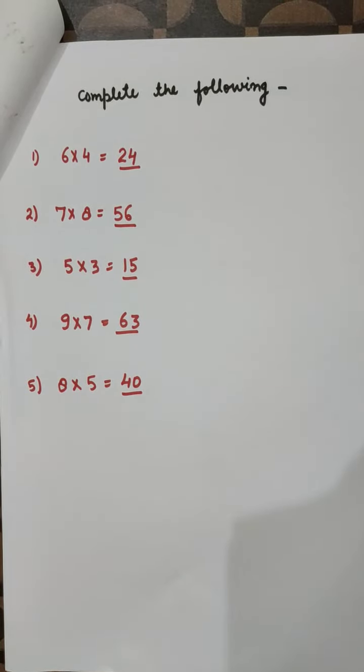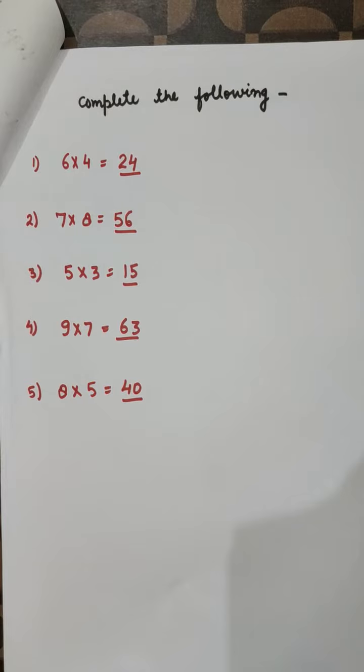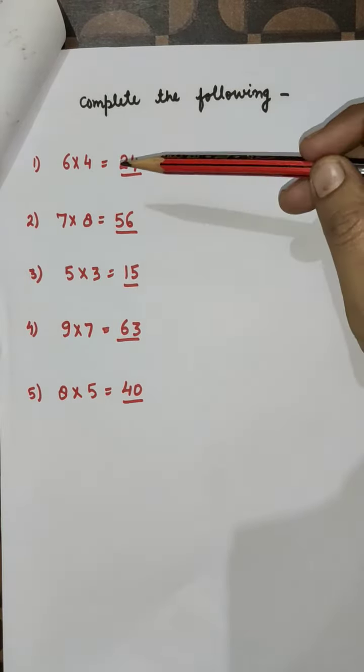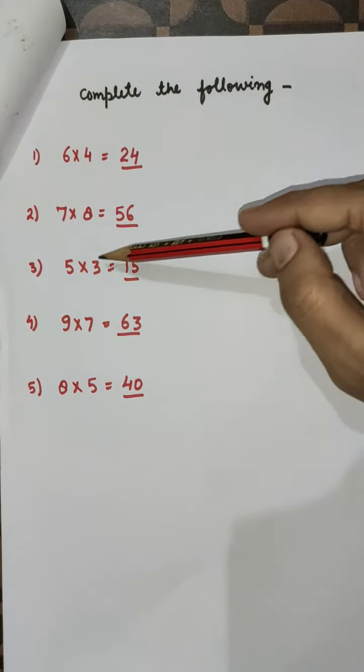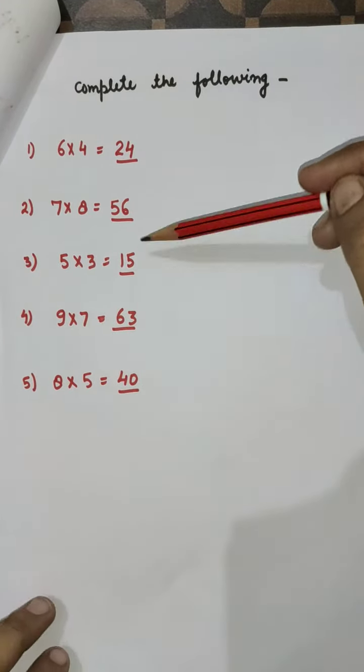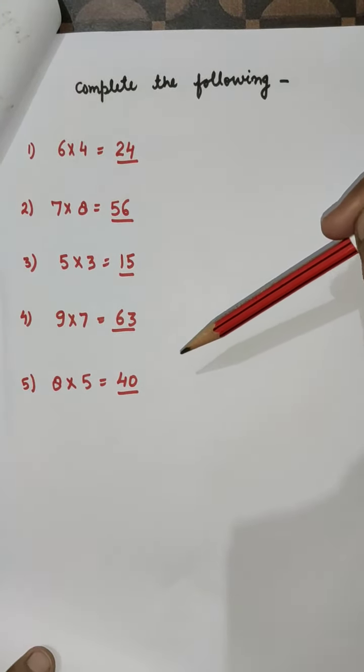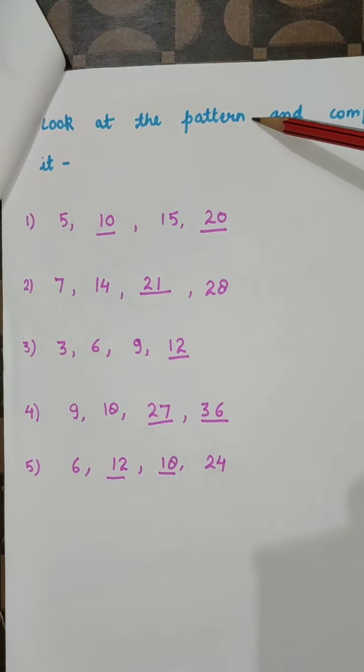Good morning dear students. As you know, we are doing how many times. Today we are going to complete the following. Now, simple: if you know the table of 6, 6×4 = 24, 7×8 = 56, 5×3 = 15, 9×7 = 63, 8×5 = 40. Now this type of question can come in your exams. Now the question based on pattern.